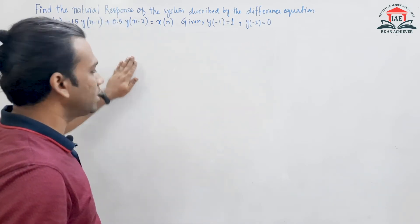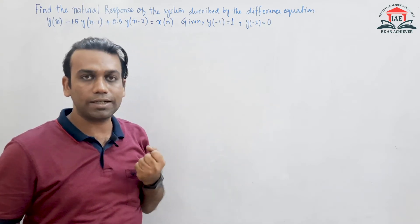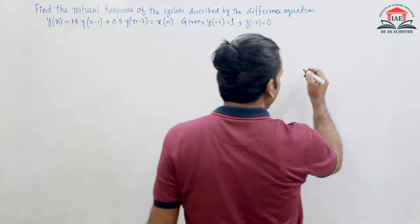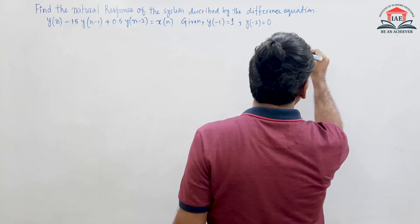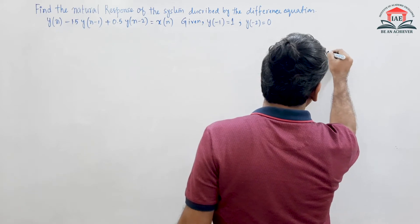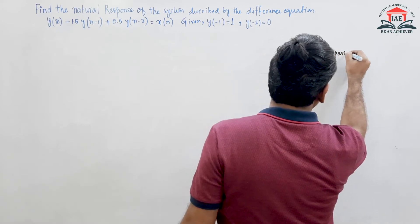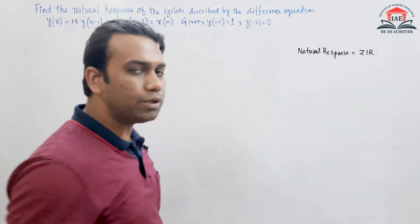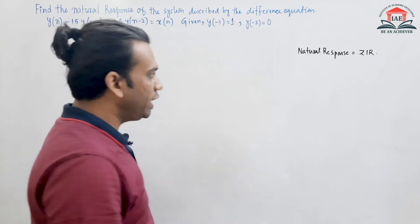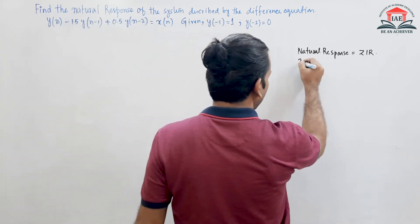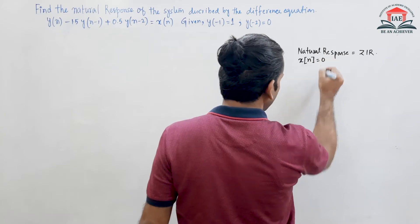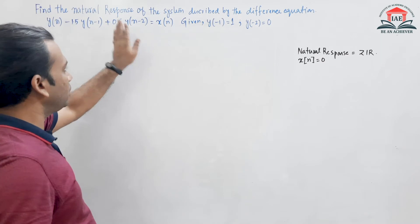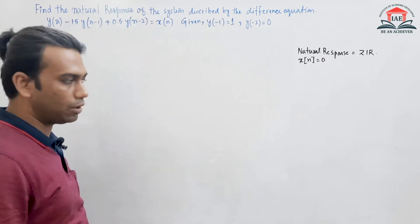This system is defined by a difference equation, and we have to find the natural response. The natural response means the zero input response — that means we have to make the input signal 0. So if x(n) = 0, we put x(n) = 0 in the difference equation.